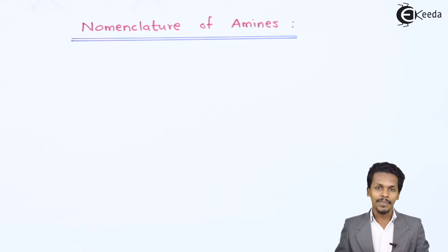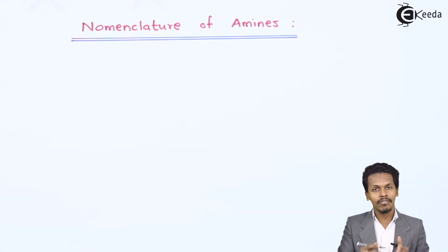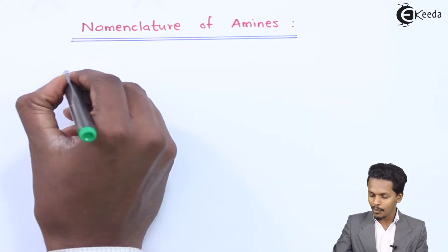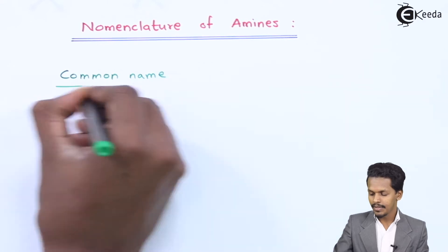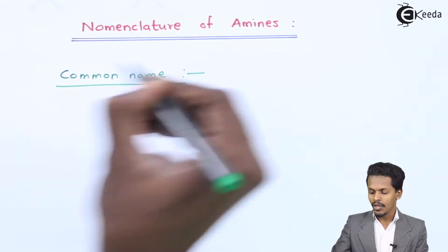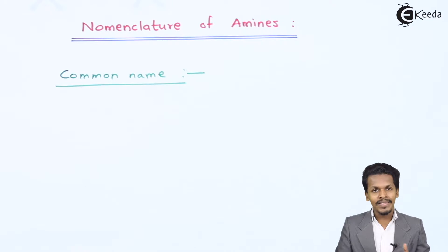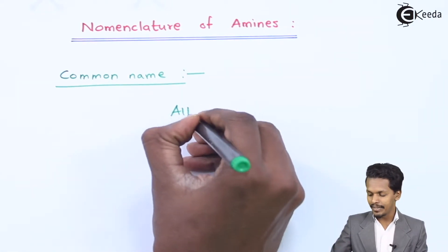For example, if we are giving a common name — and later on I will talk about IUPAC nomenclature — the common name for amines has a general form, and that general name is nothing but alkyl amine.